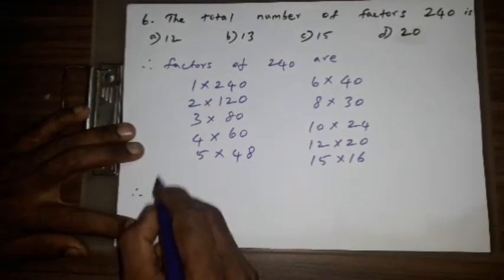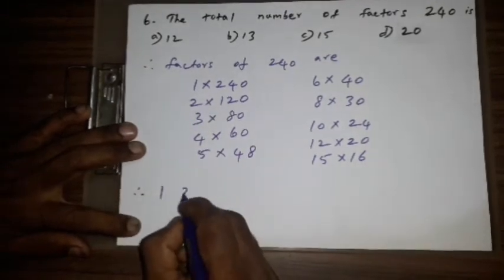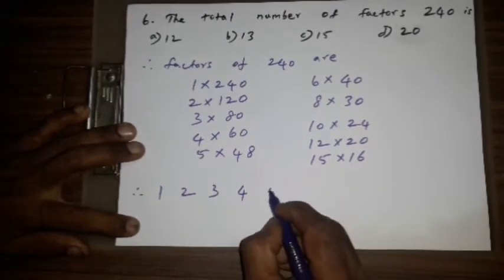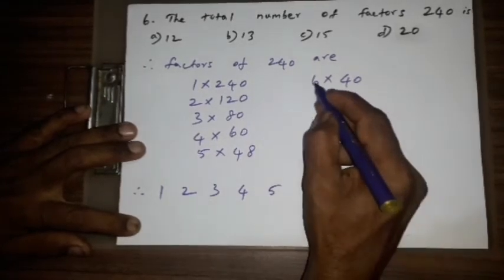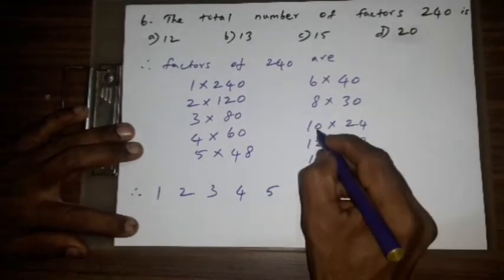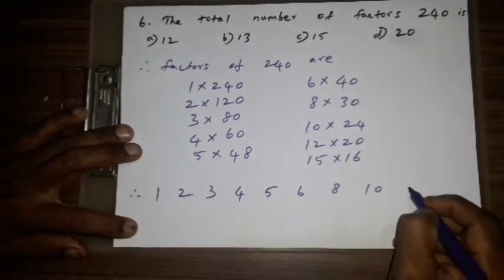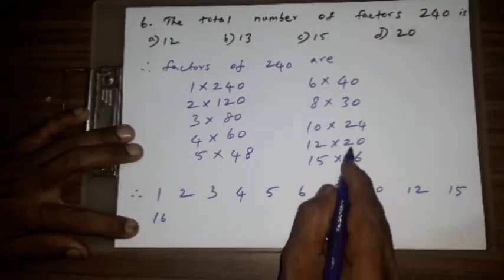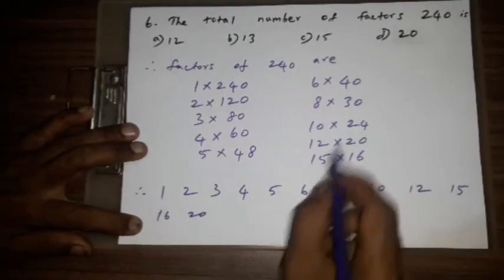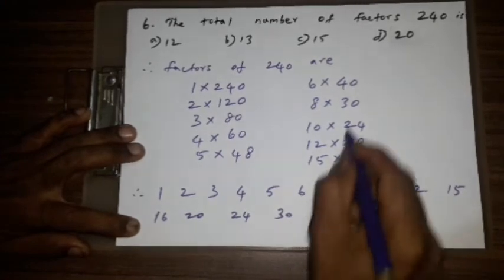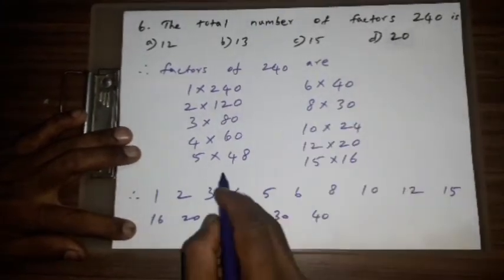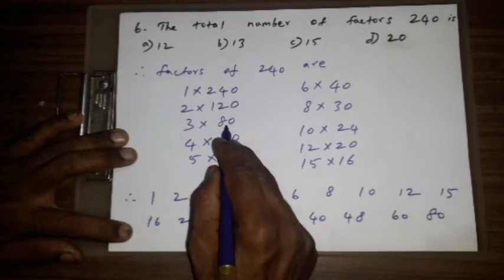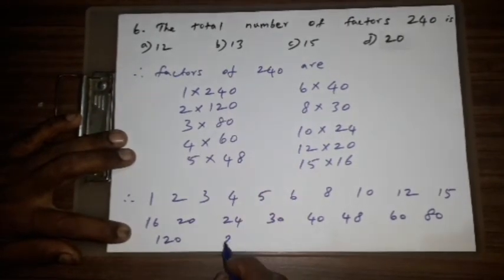Therefore, the factors are 1, 2, 3, 4, 5, 6, 8, 10, 12, 15, 16, 20, 24, 30, 40, 48, 60, 80, 120, 240.